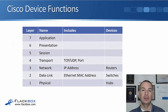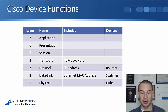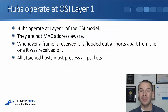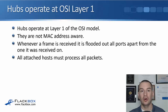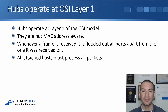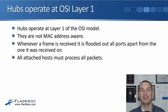Looking at the OSI stack, switches operate at layer 2 while hubs operate at layer 1. Hubs are not MAC address aware, and whenever a frame is received on a port it's flooded out to all the other ports apart from the one it was received on. Because of that, all hosts plugged in are going to receive the frame, so they're going to have to process it at least as far as seeing that it's not for them.